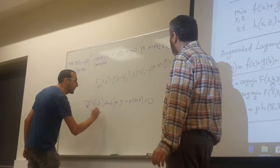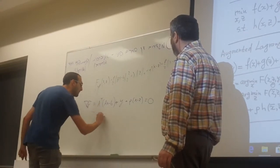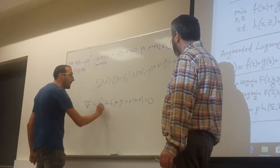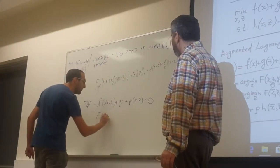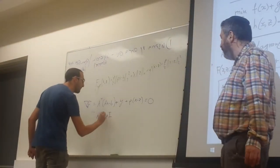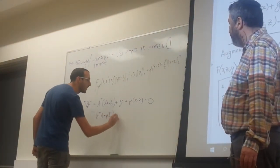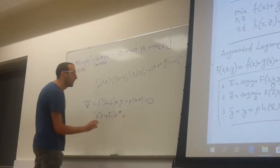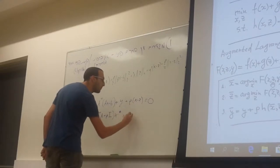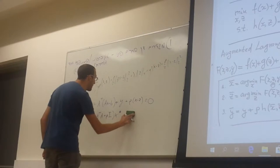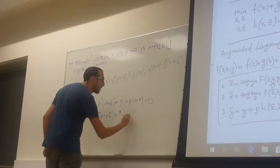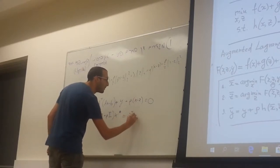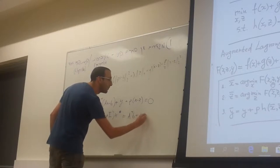So we can write it this way. A transpose A plus rho I multiplied by X. This is the best X. It's equal to rho Z minus A transpose B. Plus rho Z minus Y.